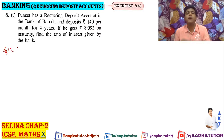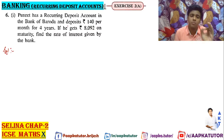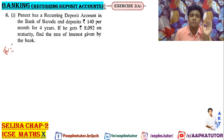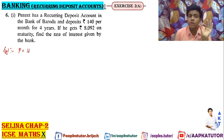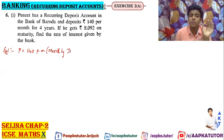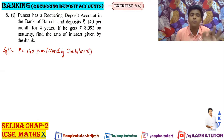Puneet has a recurring deposit account in the Bank of Baroda and deposits Rs. 140 per month. This is a monthly installment of Rs. 140 per month. After 4 years — so n is 4 years, meaning 12 × 4 = 48 months.